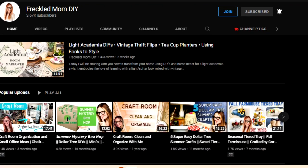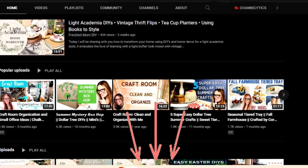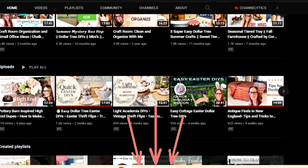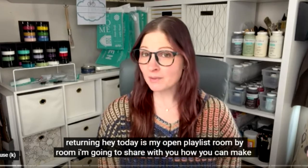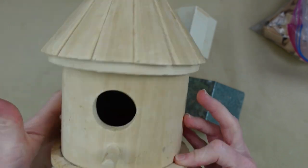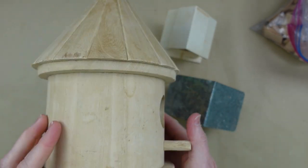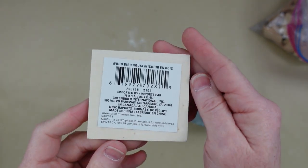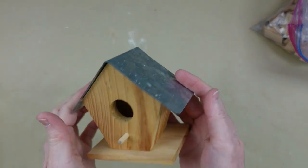Today I am working with my friend Devin from Freckled Mom DIY. I'm gonna have her links in the description box below because I would love for you to check out what she's doing. I've got a variety of birdhouses. I found this one at the thrift store. I got this one at Dollar Tree and they have several different styles and this one was thrifted as well.